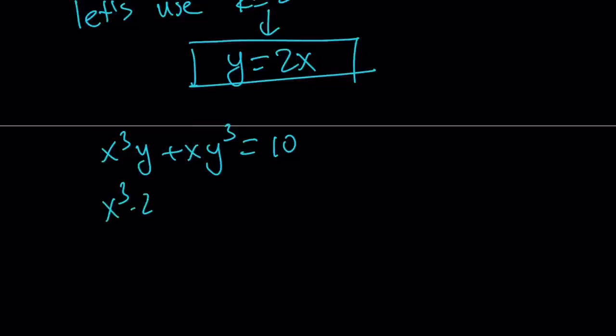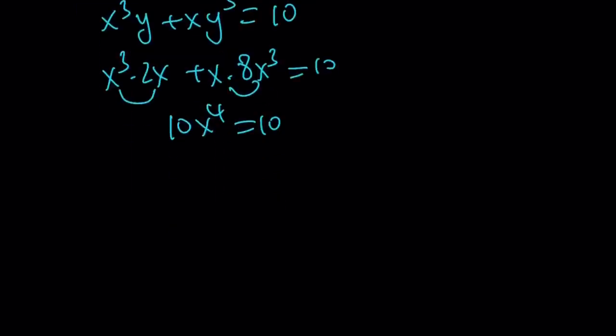Replace y with 2x. And then you're going to get 8x³ here. And this gives us 2x⁴ + 8x⁴, which is 10x⁴ = 10, which means x⁴ = 1 if you divide both sides by 10. And this gives us 2 possible solutions in the real world: x = 1 or x = -1.